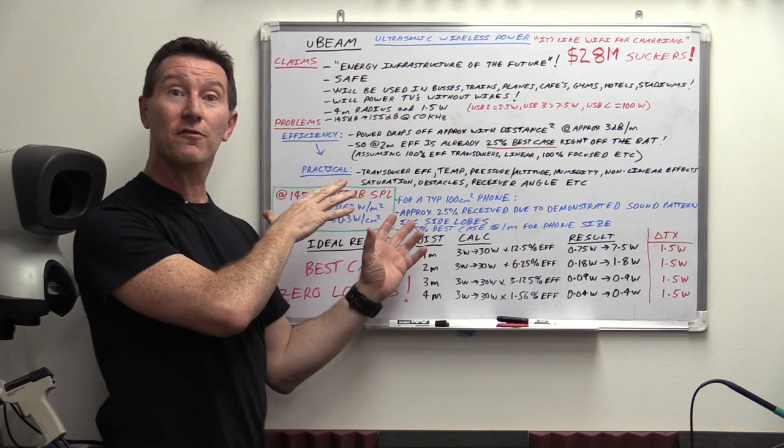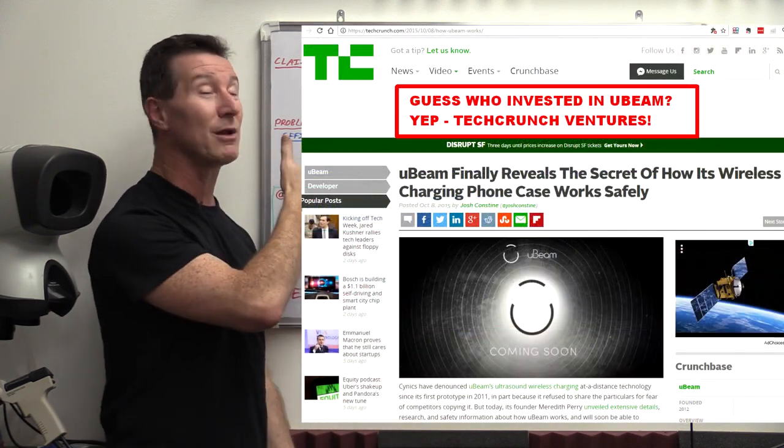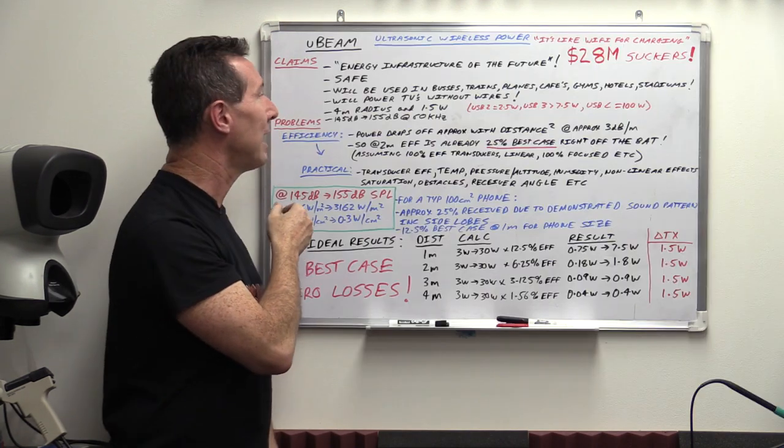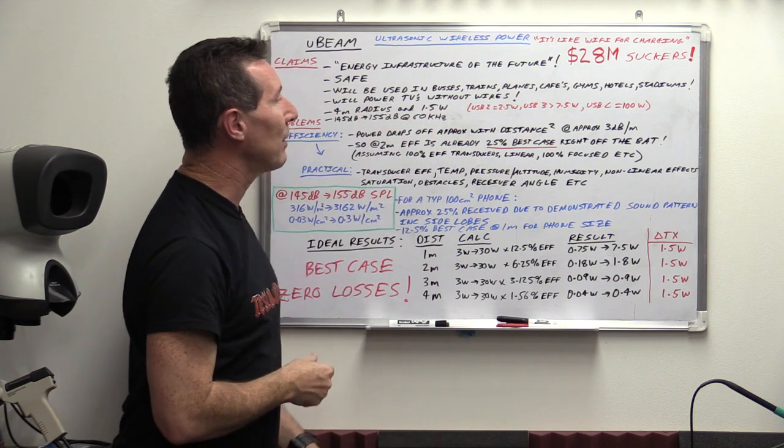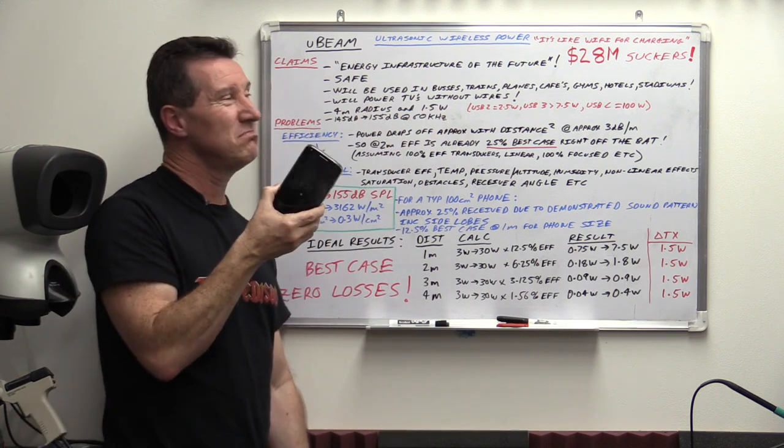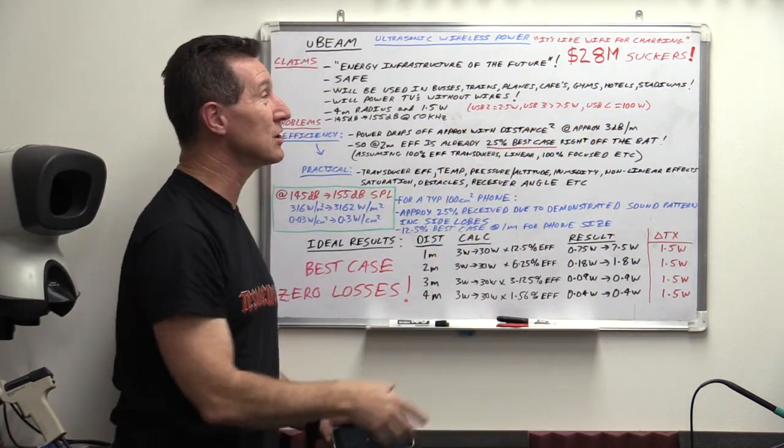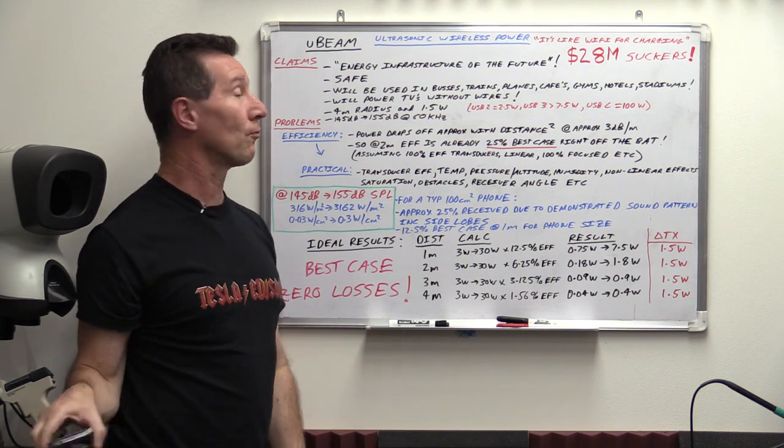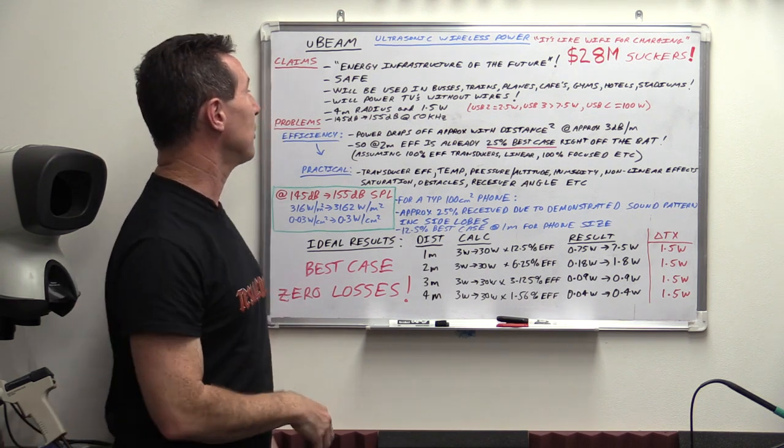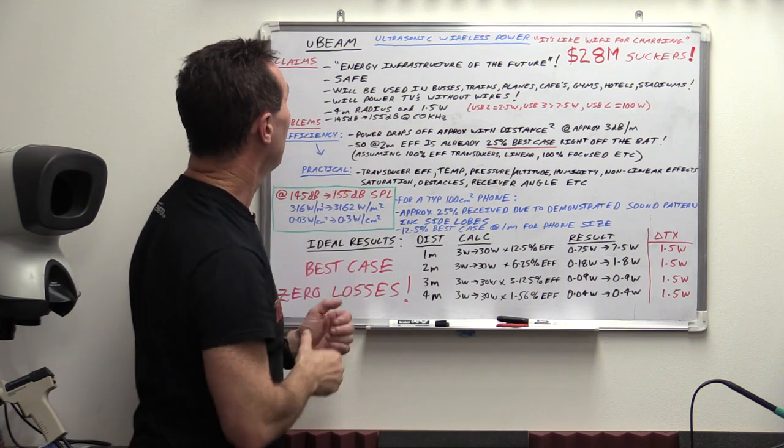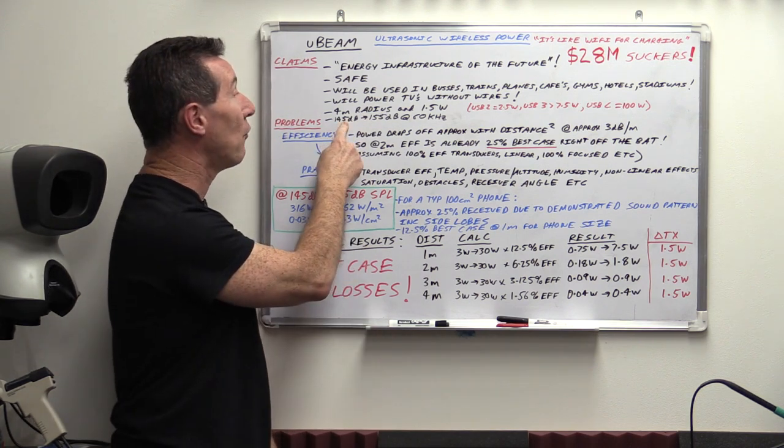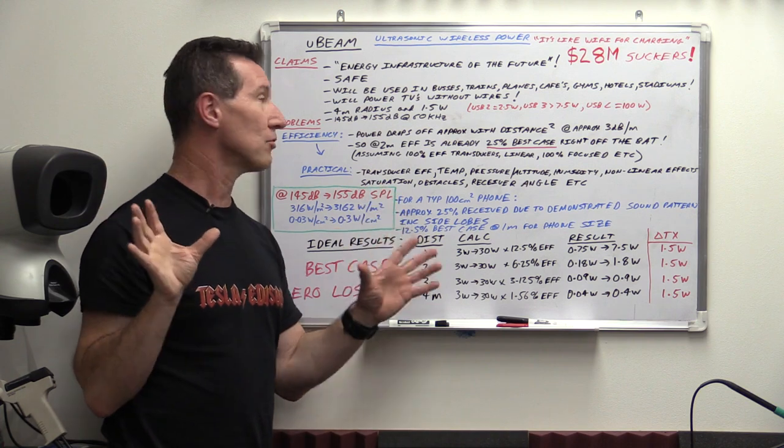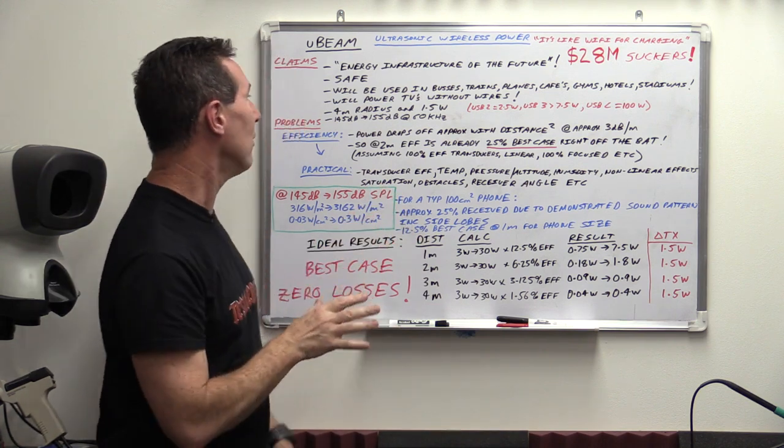Now, they were very secretive for a couple of years, and then they finally revealed some stats. They've been working on this for like five years, and they finally said, oh, we can do a four-meter radius, and we can charge a phone at 1.5 watts. It's not nearly as good as USB can do, especially USB-C these days. You can wonder why anyone needs wireless charging at all really, with how fast modern chargers can actually go. And they released their specs for what their transmit power is: 145 dB to 155 dB at 60 kilohertz SPL, sound pressure level. Now, we'll talk about that in a minute.